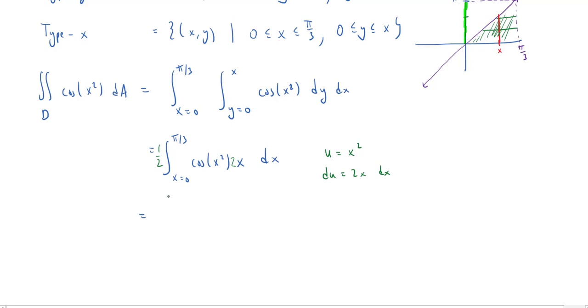Okay, so what do we got? We've got 1 half. Now I want to integrate. I have x's, but I just want to make them u's. So when x is 0, u also is 0, because u is x squared. So u goes from 0 to, now let's see, when x is pi over 3, we'll get pi squared over 9. It's pi over 3 squared. Cosine of x squared is now just cosine of u, and 2x dx is just du.